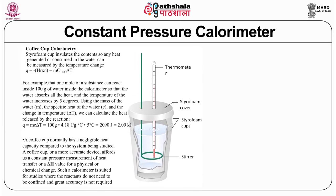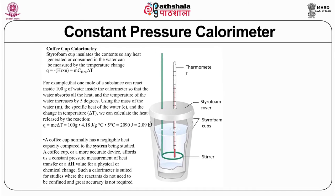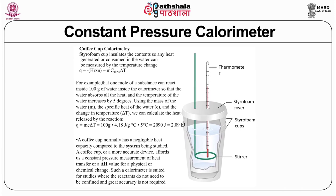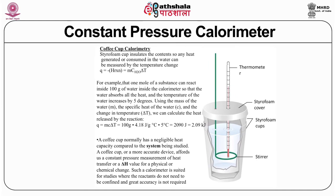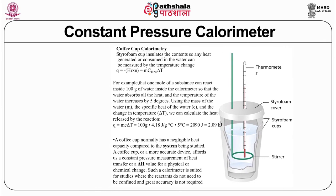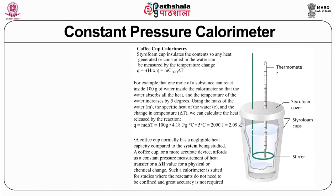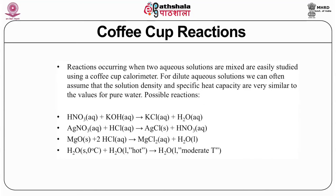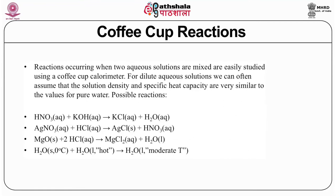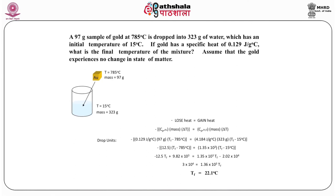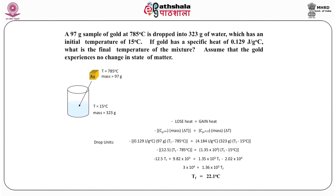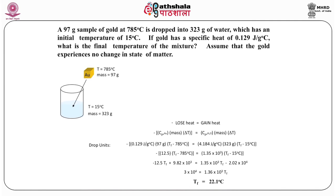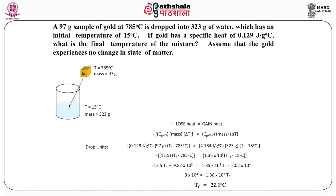The constant pressure calorimeter, also commonly called the coffee cup calorimeter, normally has a negligible heat capacity compared to the system being studied. A coffee cup or more accurate device provides a constant pressure measurement of heat transfer, or delta H value, for a physical or chemical change. Such a calorimeter is suited for studies where the reactants do not need to be confined and great accuracy is not required. Typical chemistry and inorganic chemistry reactions can be studied with this method.